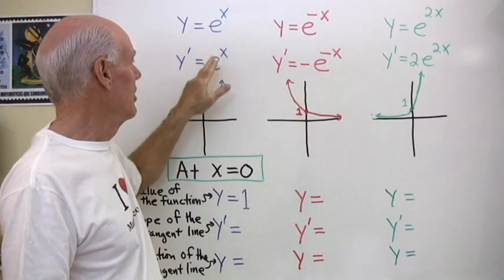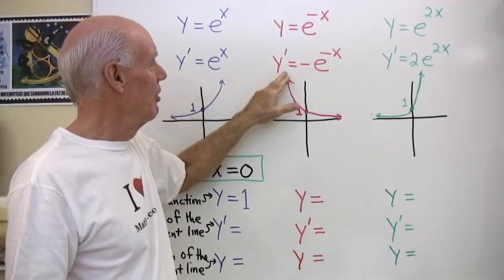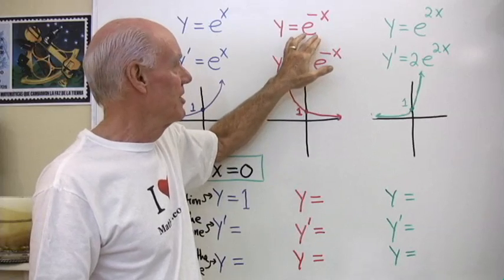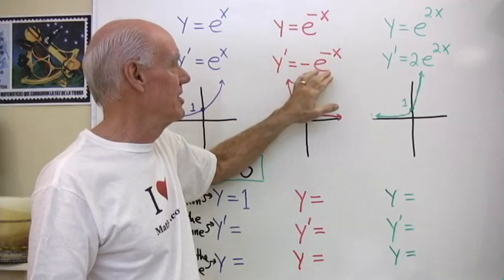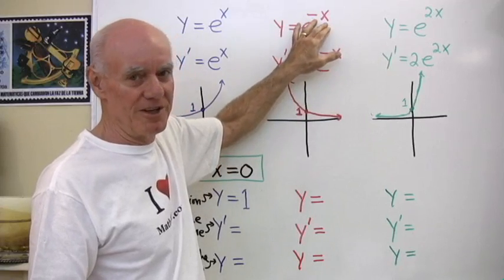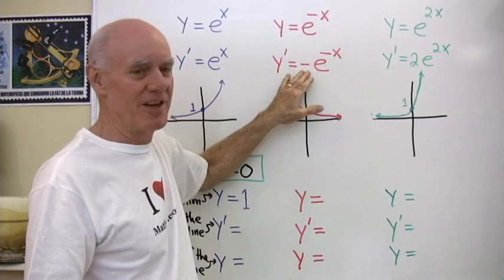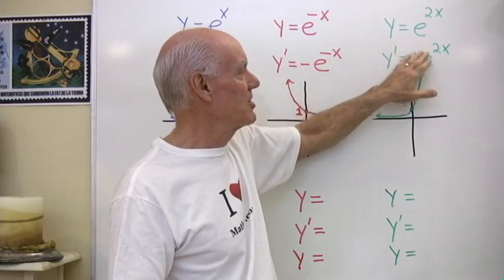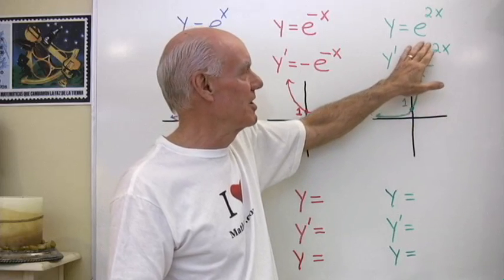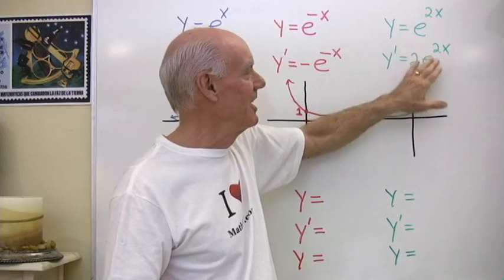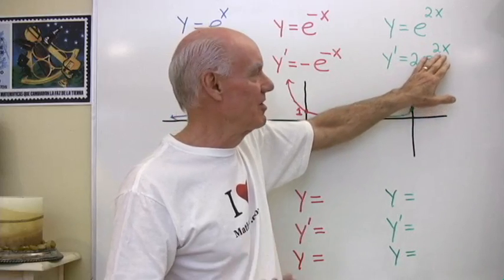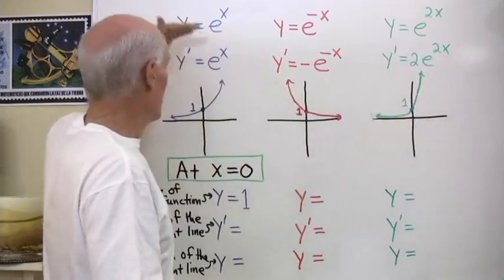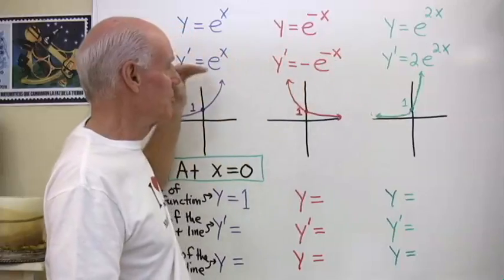Here I've differentiated each one. y' is e to the x. Over here, y' is negative e to the negative x. By the chain rule, when I differentiate e to the negative x, the derivative is e to the negative x times the derivative of negative x, which is negative 1. So that's why I have the negative sign out in front. For e to the 2x, its derivative is 2e to the 2x, because by the chain rule I get e to the 2x, then I differentiate 2x, which gives me 2. So I have the functions up here and their derivatives right here.